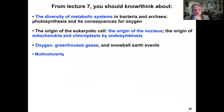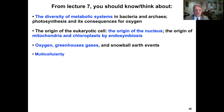In this lecture, you should be able to think about the diversity of metabolic systems in bacteria and archaea, where photosynthesis was invented and its consequences for oxygen in Earth's oceans and atmosphere, the origin of the eukaryotic cell — the origin of the nucleus, mitochondria, and chloroplasts by endosymbiosis — and oxygen, greenhouse gases, and snowball Earth events. Also the onset and early history of multicellularity in the history of life. Until next time, be well, be safe.